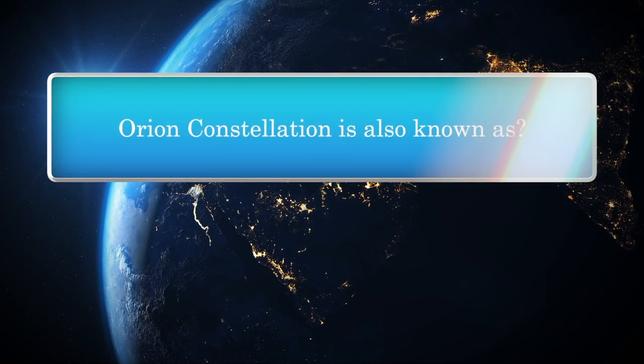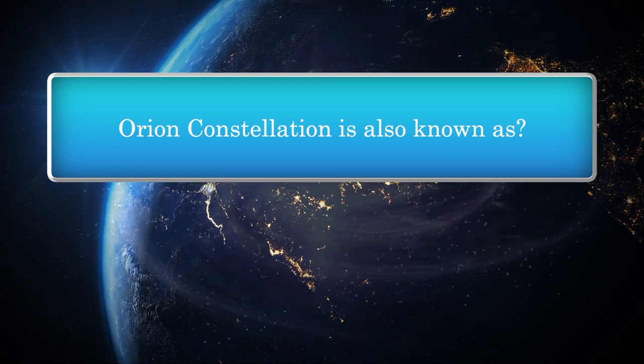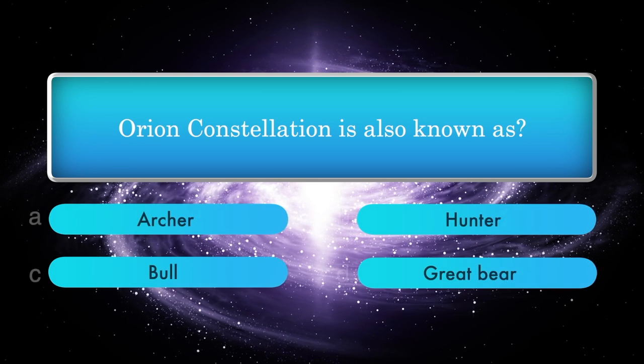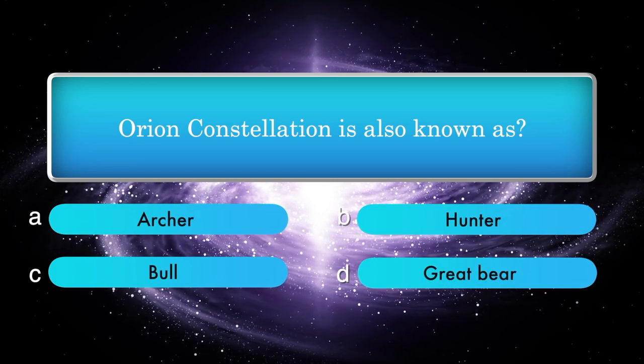Orion constellation is also known as? Options: Archer, Hunter, Great Bear.